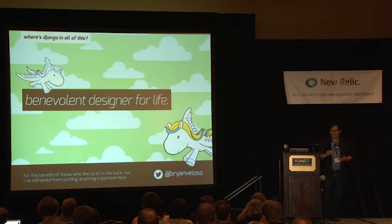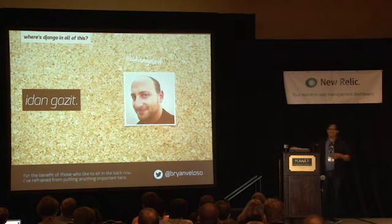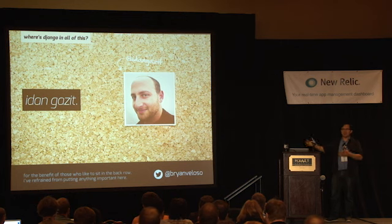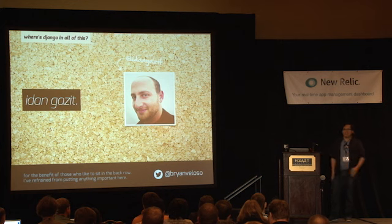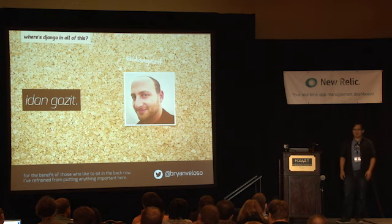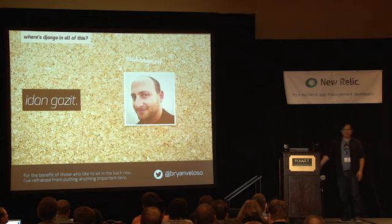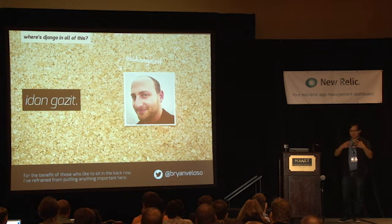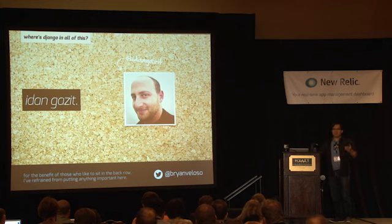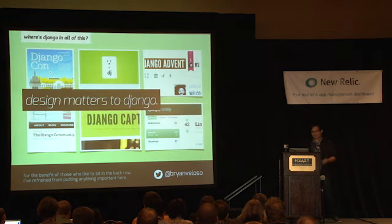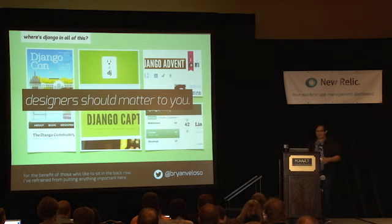It goes even farther than that in Django's case, because of four words: the Benevolent Designer for Life. The fact that we have Idang Gazit — the day he was put onto the team I was so elated. You talk about Ruby-level design, yet you don't have anybody on the Core Rails team saying 'we're getting serious on design.' Idang does that for us. Whether that's the future admin or future sites, he's already setting the bar for what design in Django can be, and we should take advantage of that and drive it forward. Because design matters to Django, designers should matter to you.